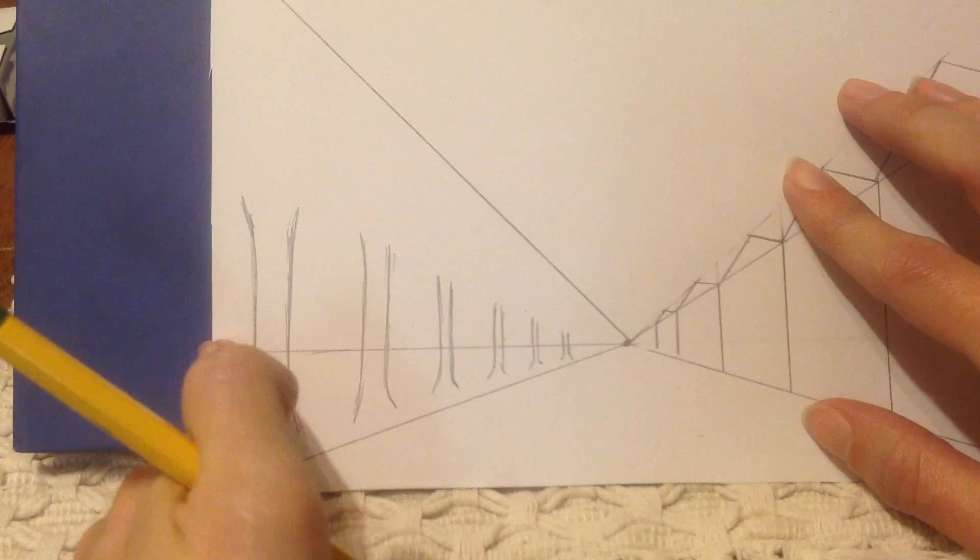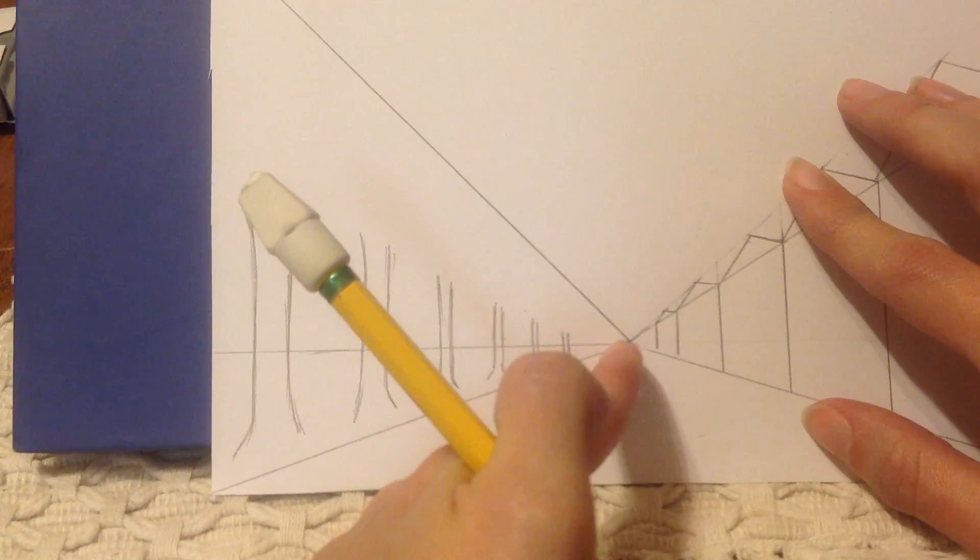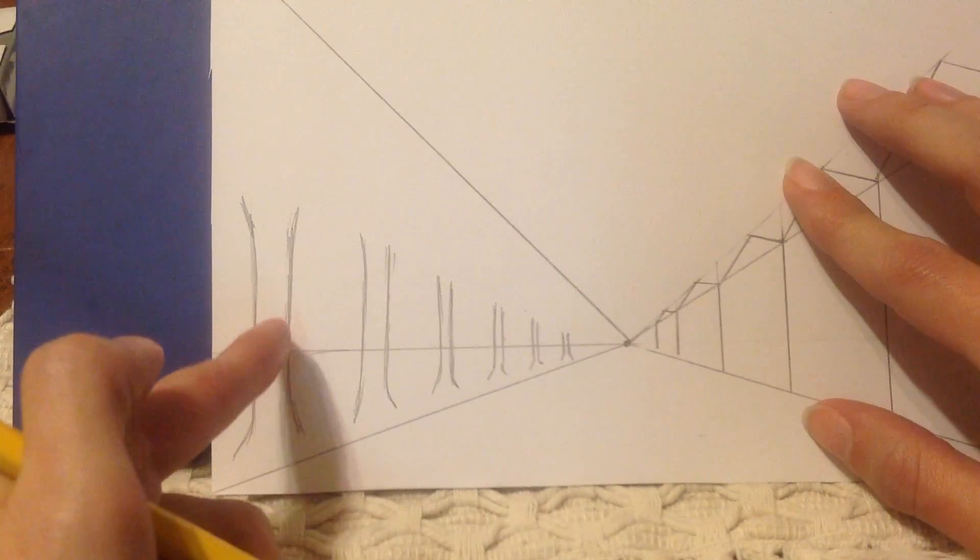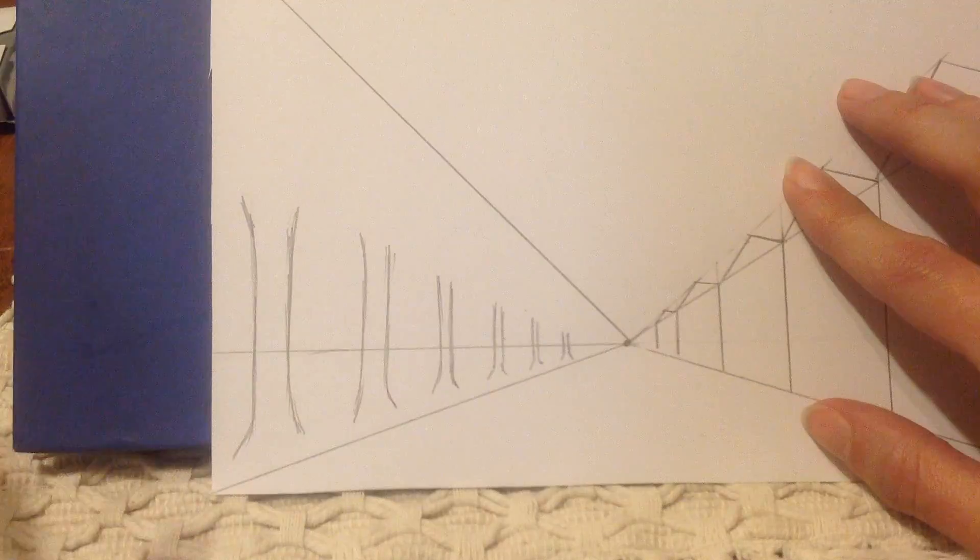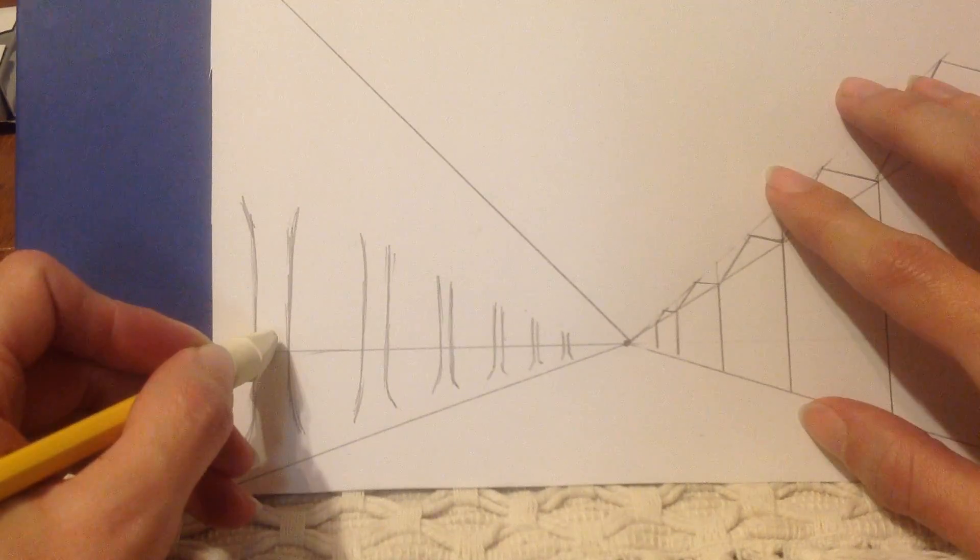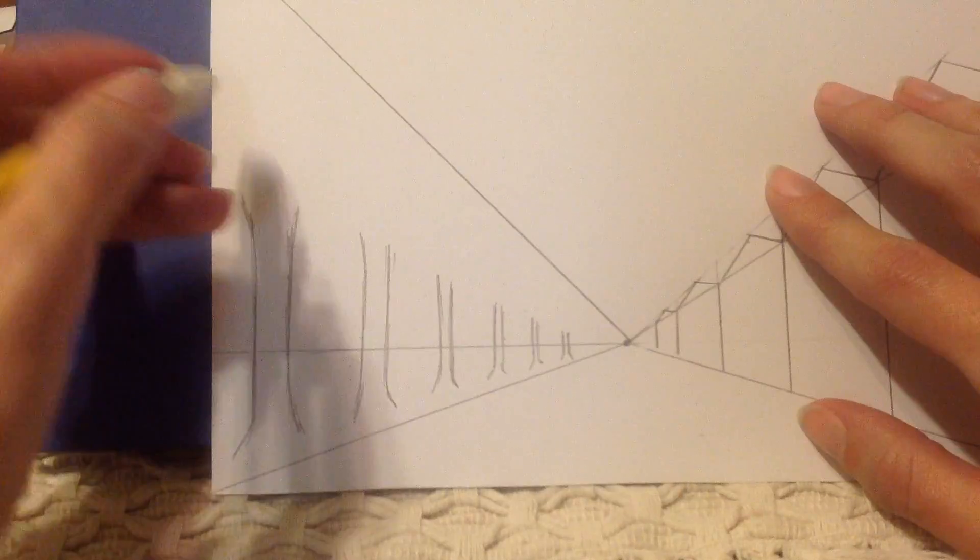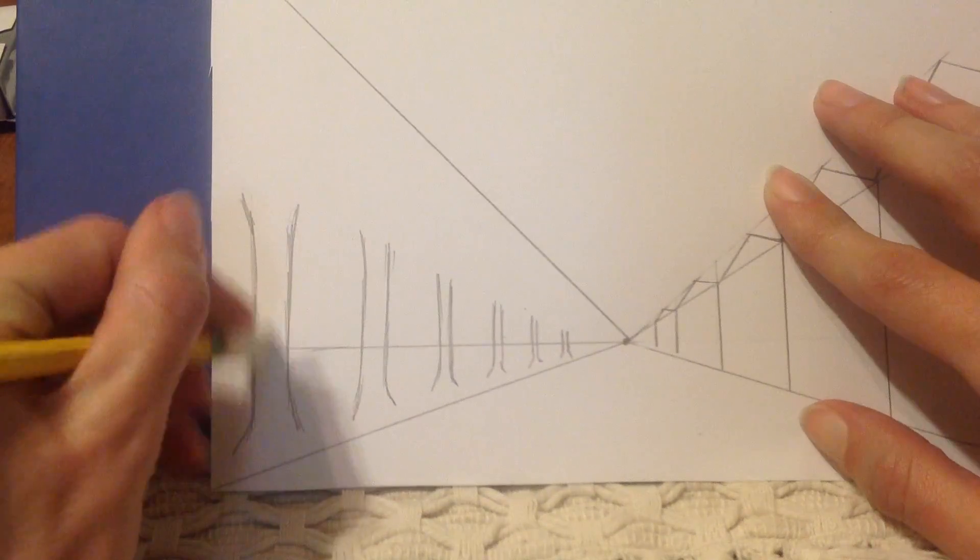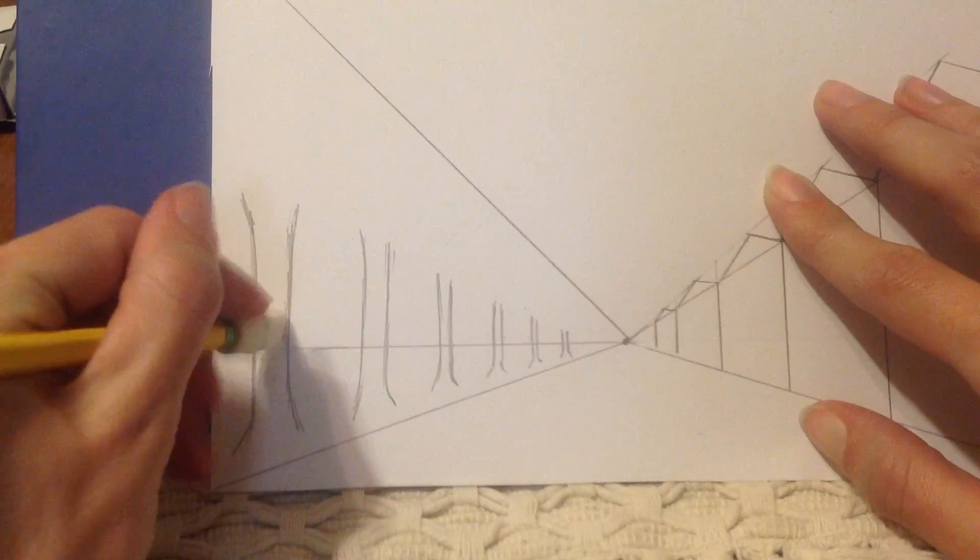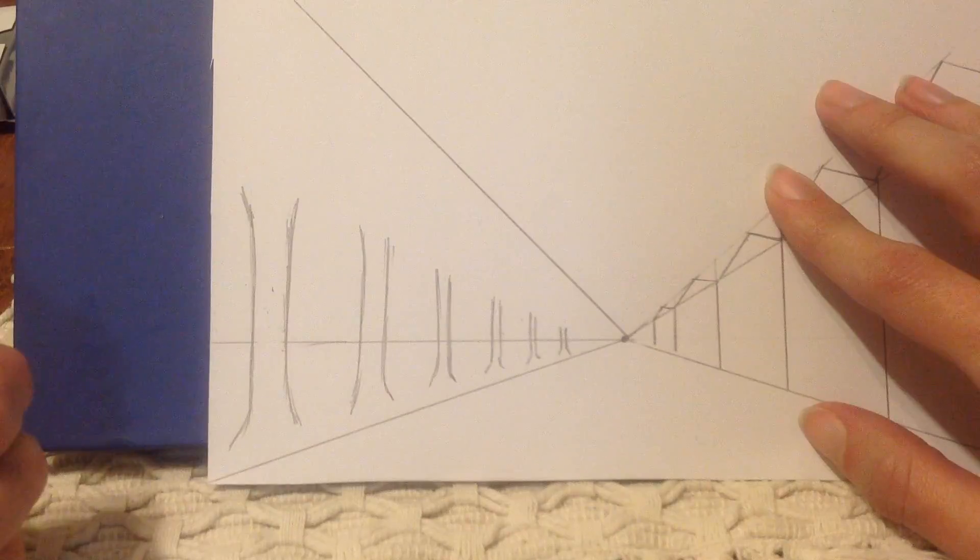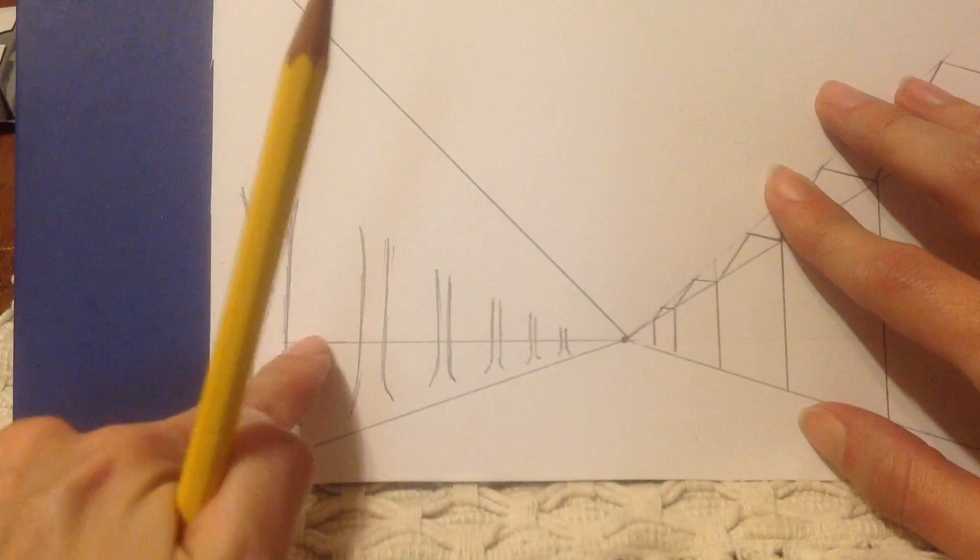Now you'll notice that the horizon line is going across all of these tree trunks. But the tree trunks are covering part of the horizon line, so I'm going to erase just the part of the horizon line that's being covered up by the tree trunk. So right inside of each trunk, I erase the horizontal line so that it looks like it goes behind it.